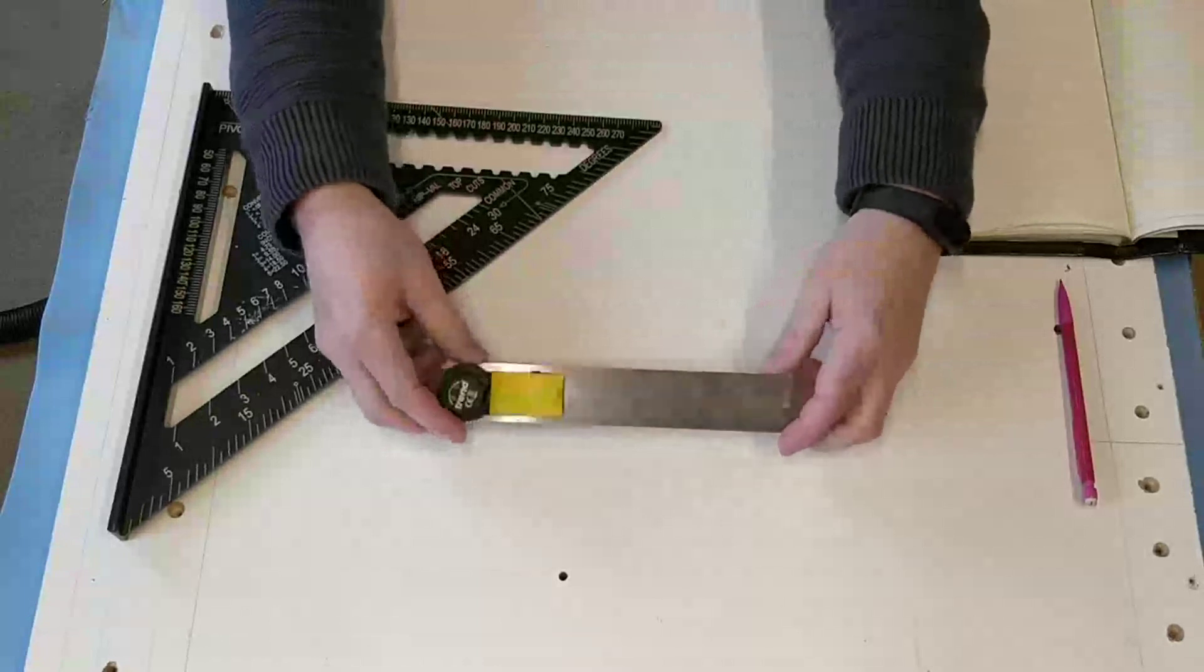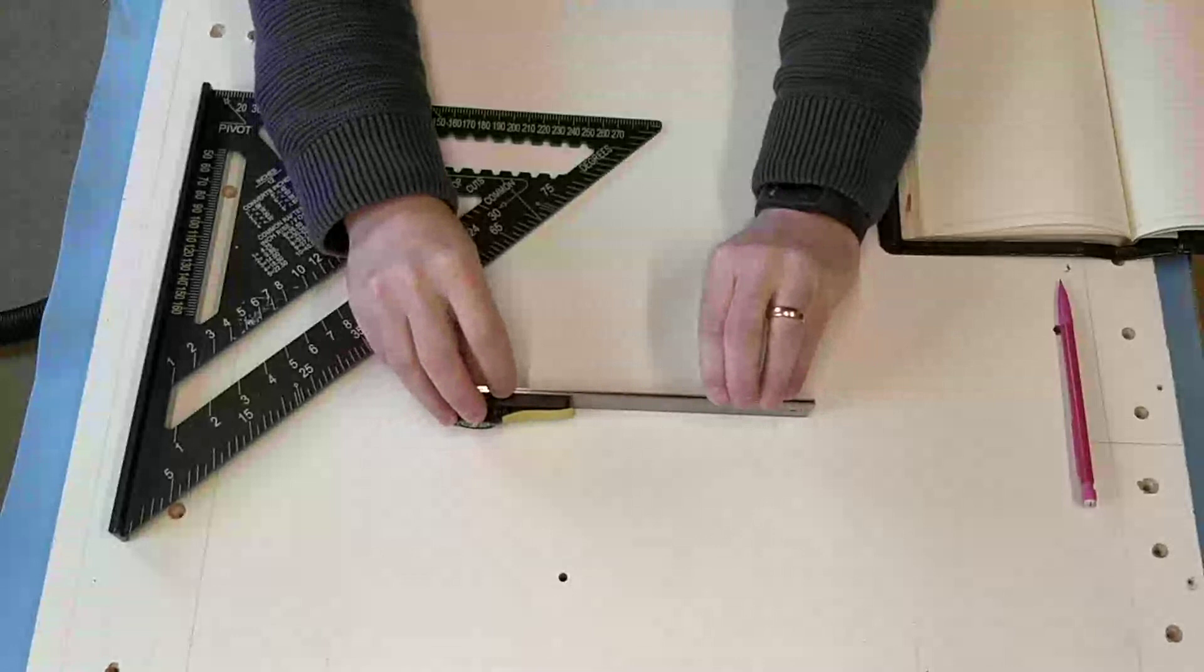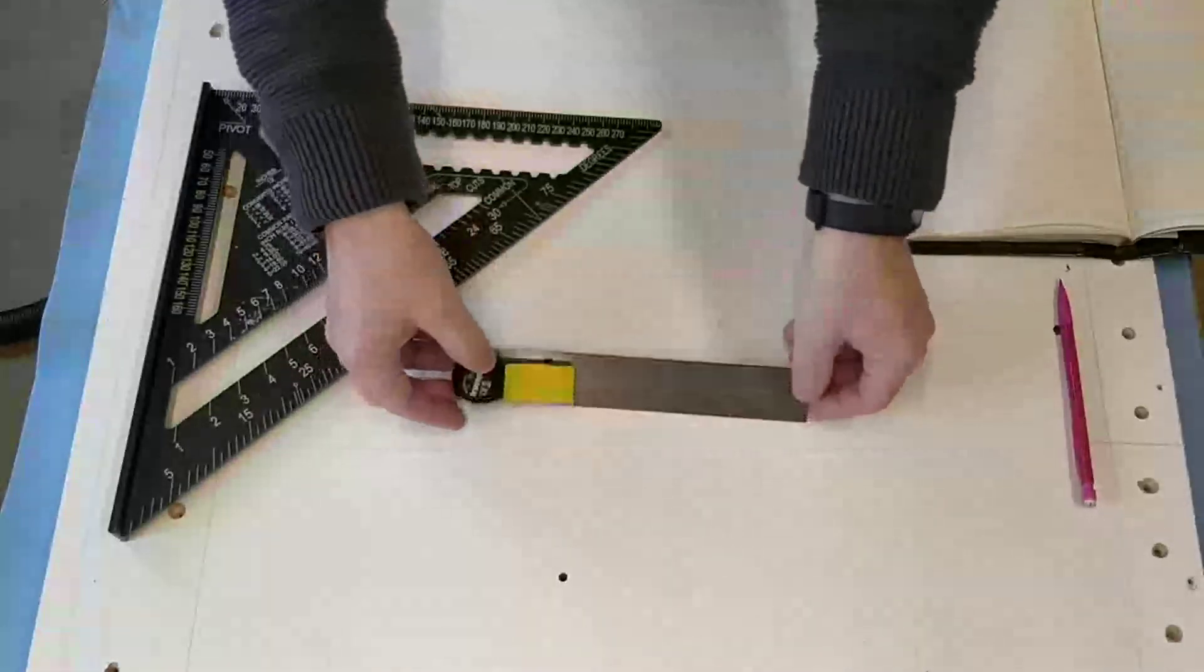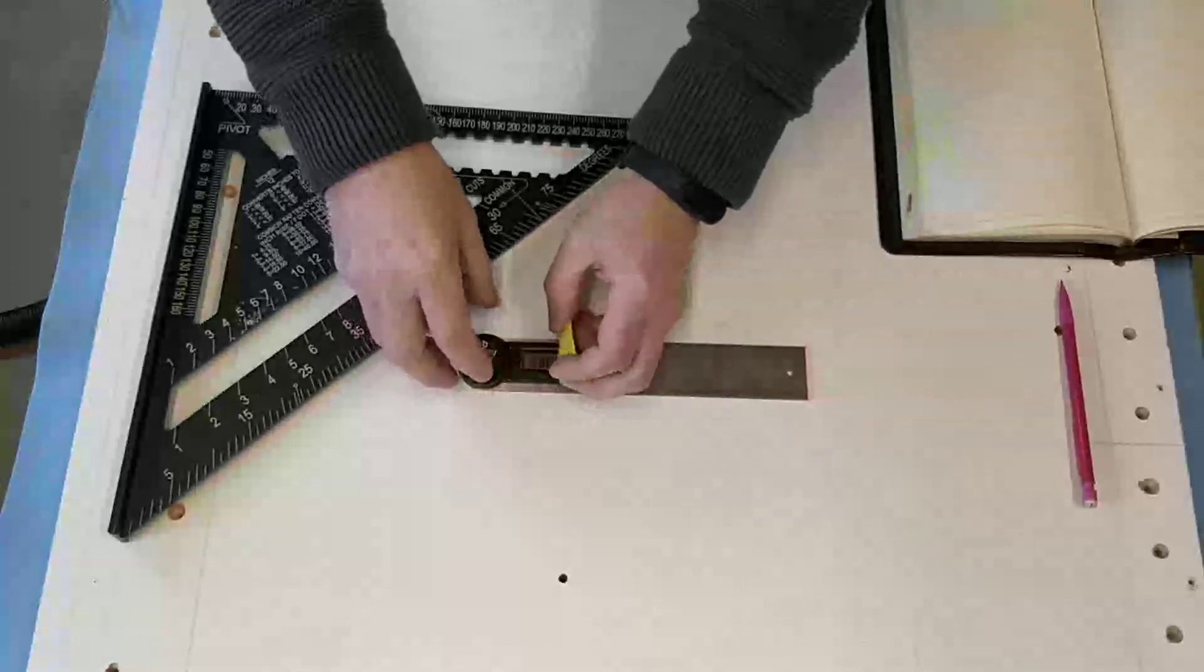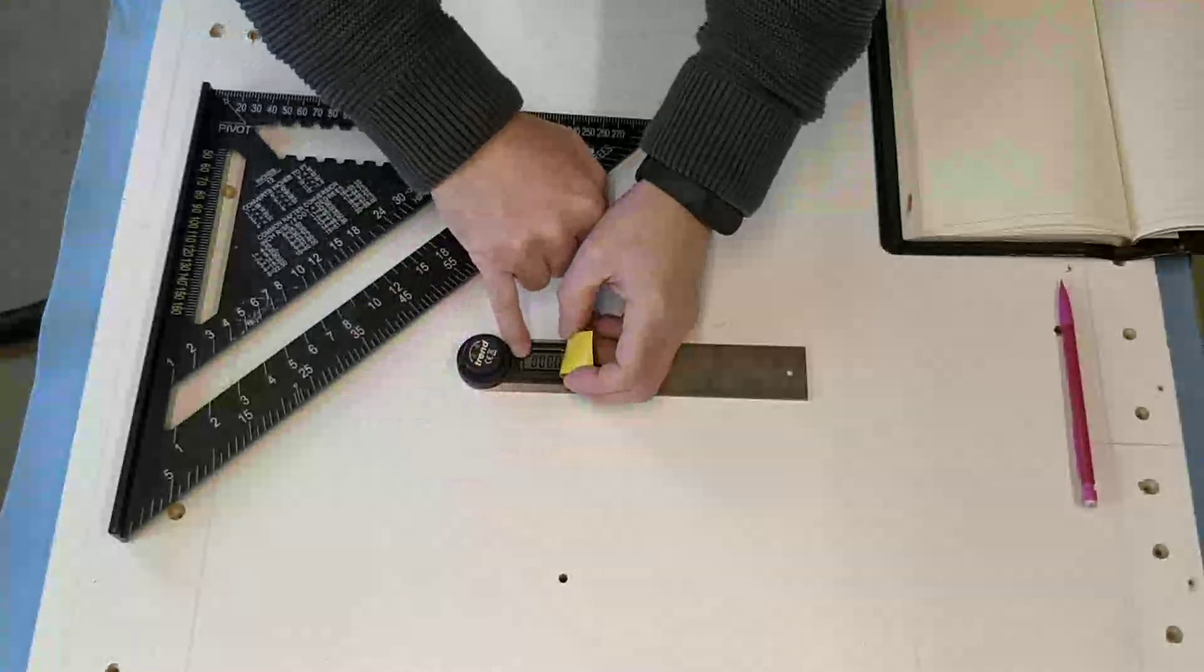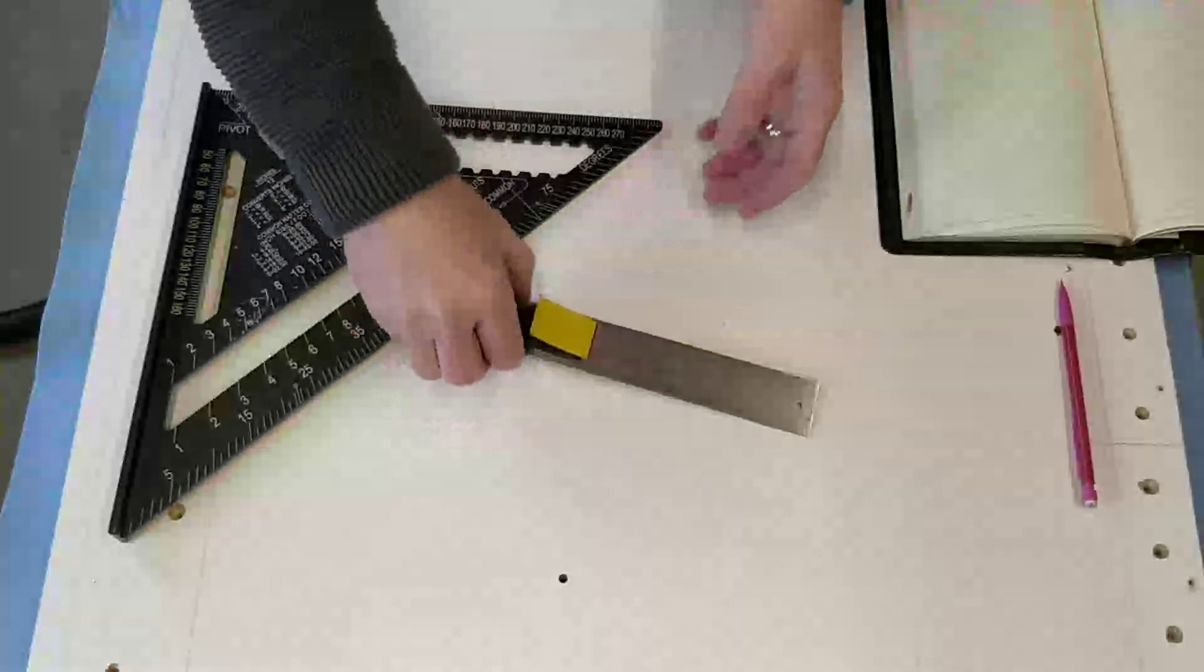First of all I'm going to zero the device. So that's perfectly flat. Put that on its side. I'm just going to press the zero button. It's already on zero but I'll press the zero button anyway. Okay, now I'll do my measures.